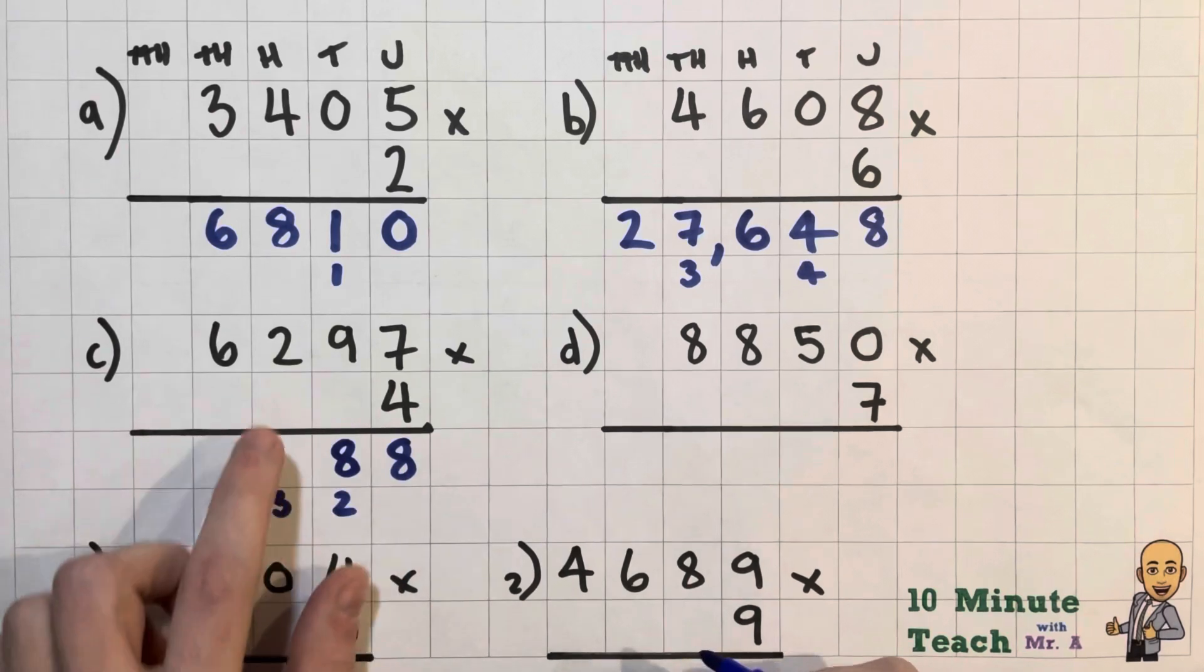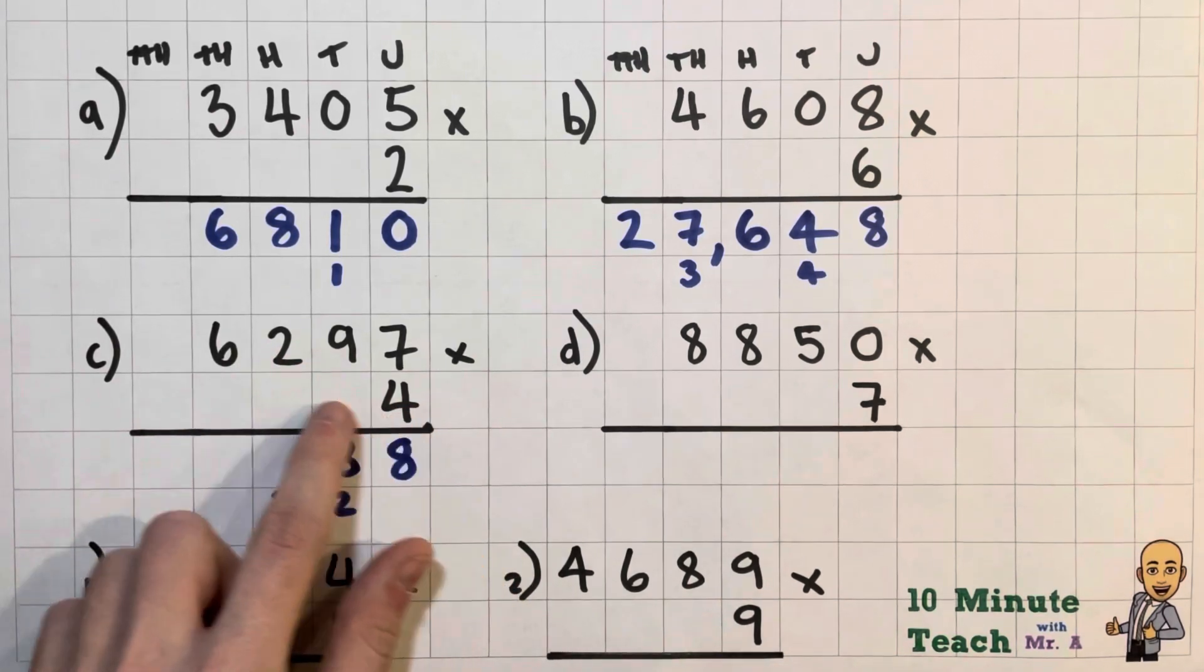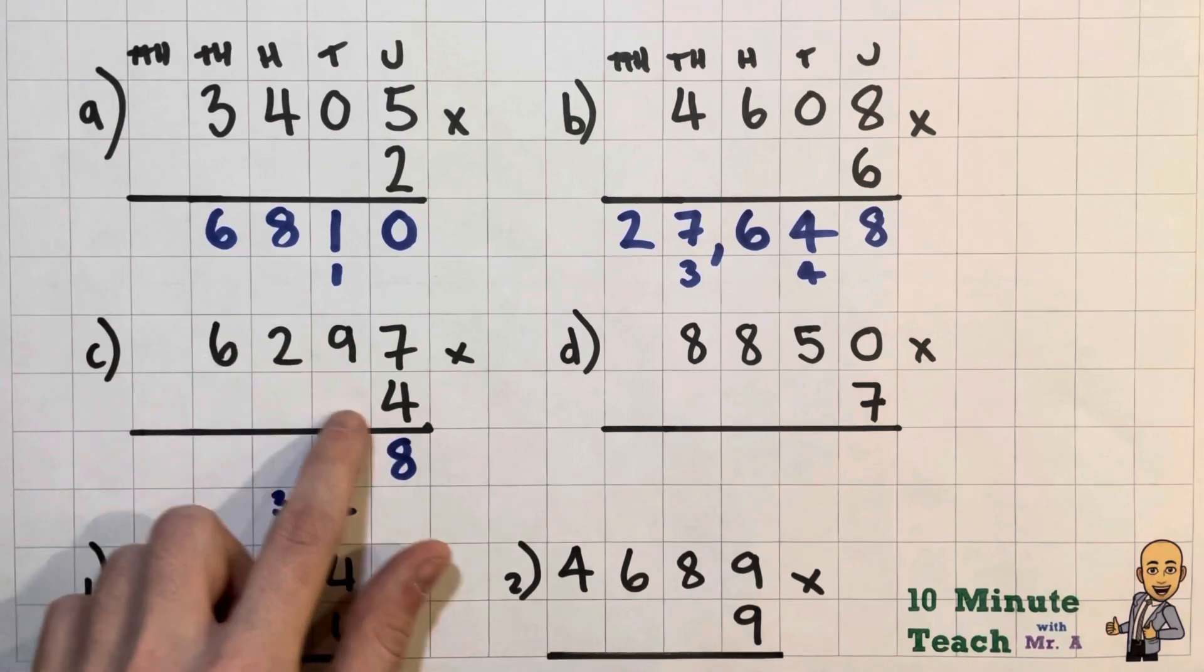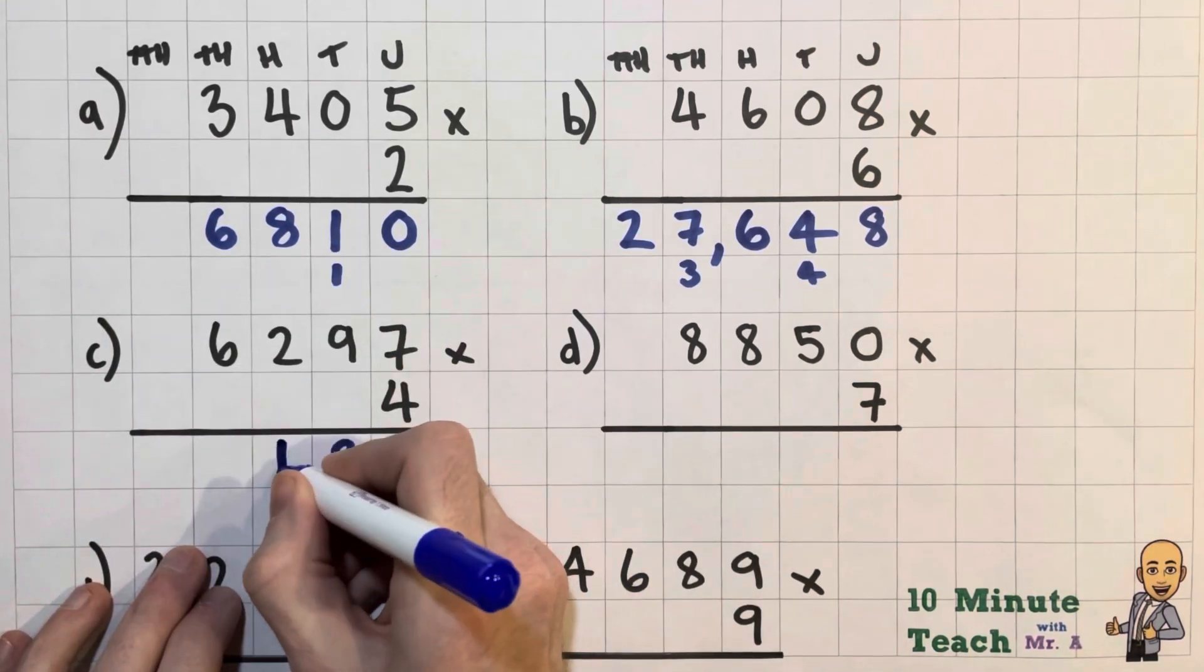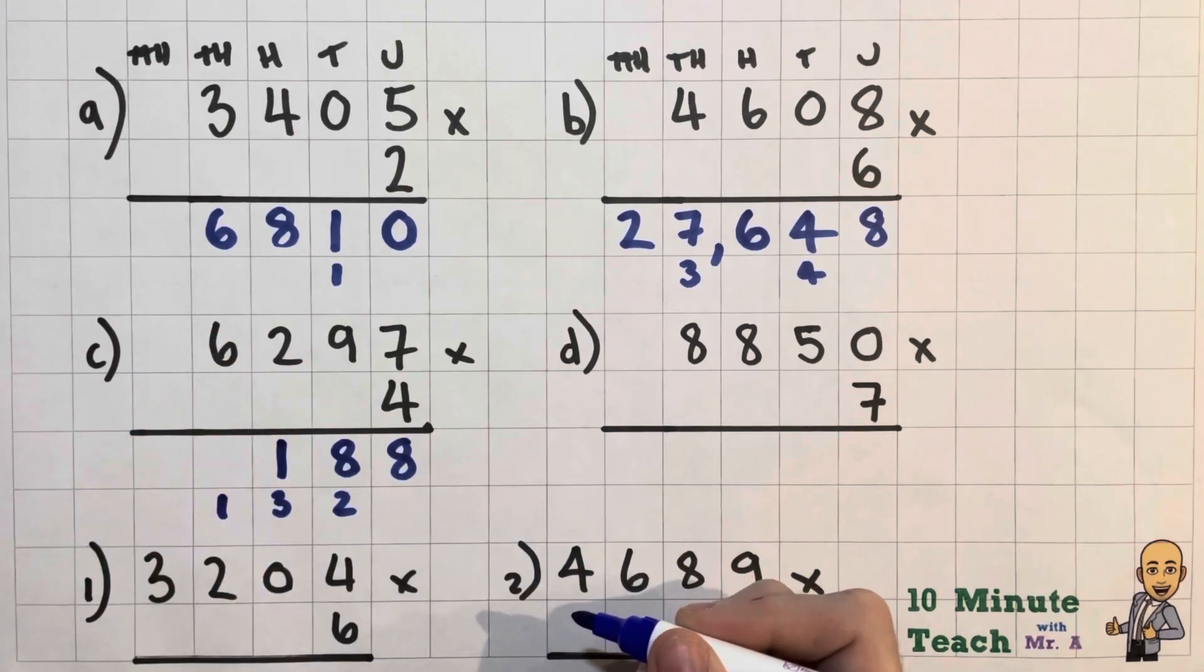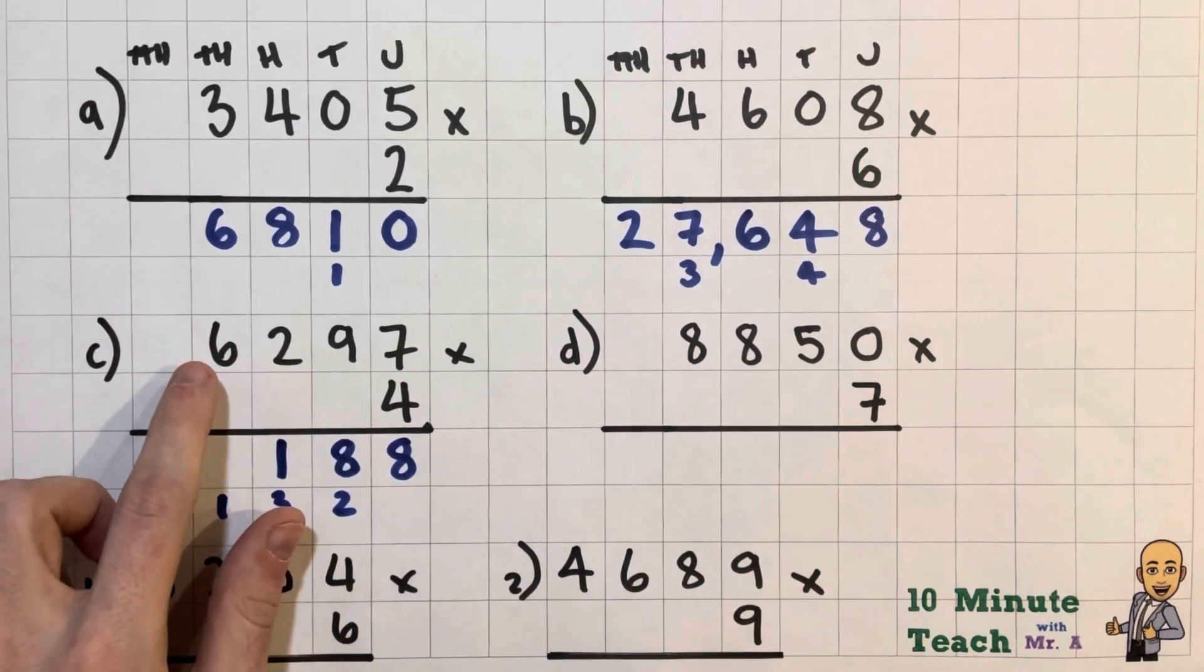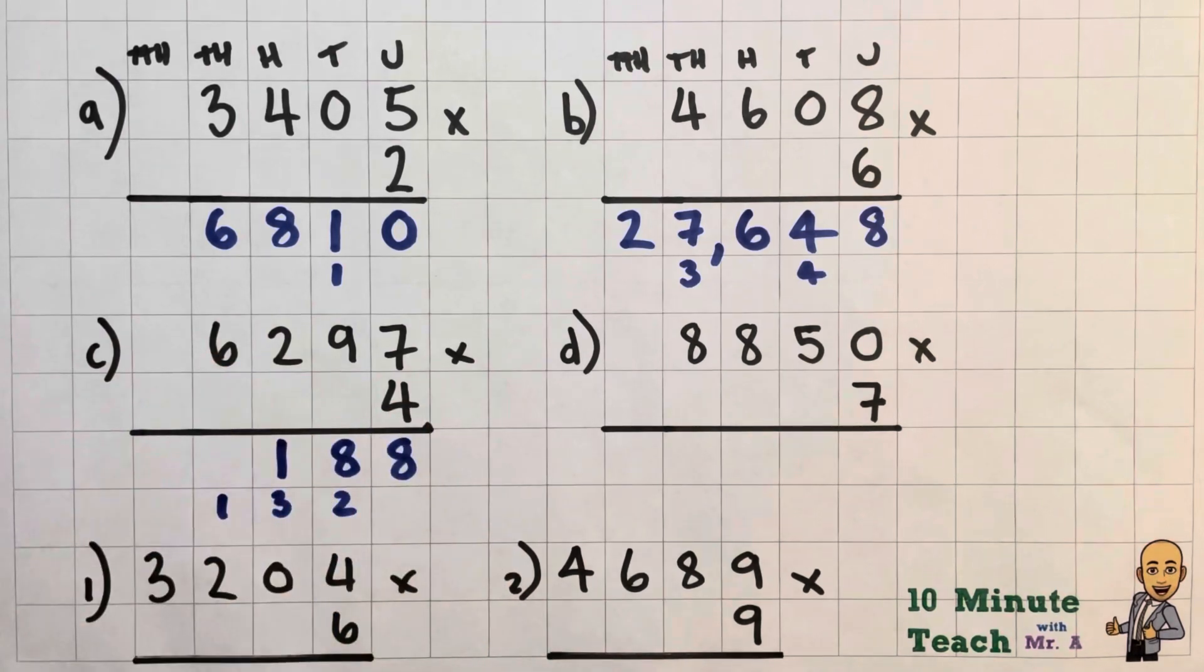So 360 add another 20 is 38, so 380. We've popped that in there. 200 times 4, or 2 times 4 is 8, so that will actually be 800 because it's in our hundreds column. 900, 1000, 1100. So I can put my 100 in my hundreds column and carry over my 1000 to my thousands column.